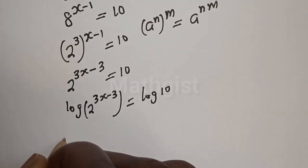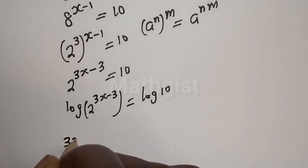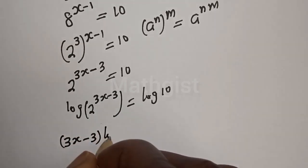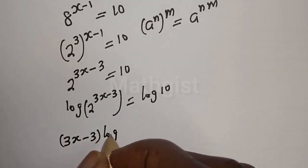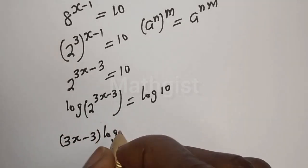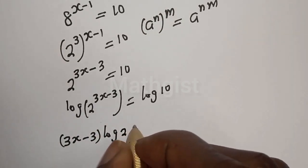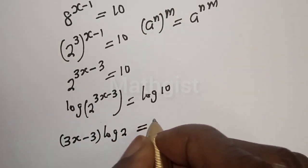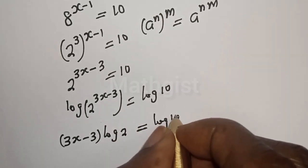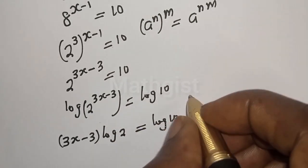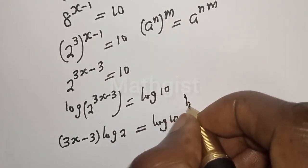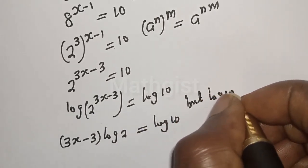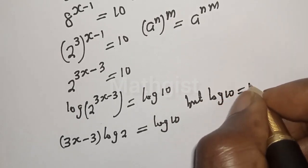Applying the log power rule, we get 3s minus 3 times log 2 is equal to log 10. But log 10 is equal to 1.